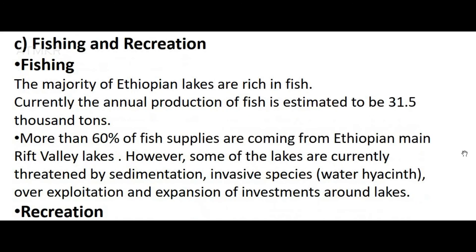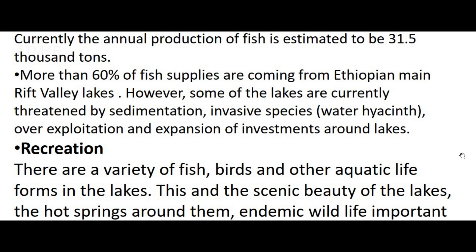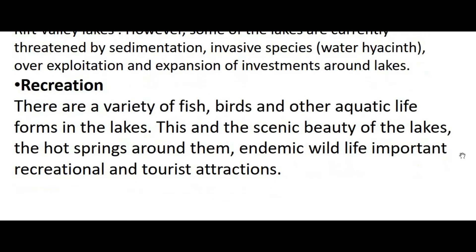C. Fishing and Recreation: The majority of Ethiopian lakes are rich in fish. Currently the annual production of fish is estimated to be 31.5 thousand tons. More than 60% of fish supplies are coming from Ethiopian Main Rift Valley lakes. However, some of the lakes are currently threatened by sedimentation, invasive species, water hyacinth, over-exploitation, and expansion of investments around lakes. There are a variety of fish, birds, and other aquatic life forms in the lakes. This, along with the scenic beauty of the lakes, hot springs around them, and endemic wildlife, makes them important recreational and tourist attractions.